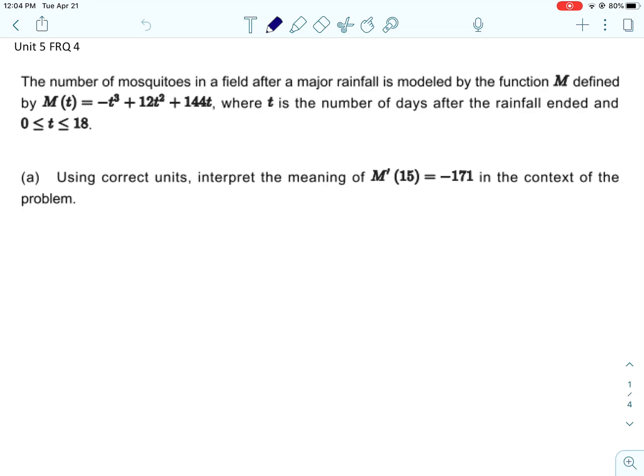All right, so this last application of derivatives problem is about mosquitoes, and I kind of like these questions where there's some kind of meaning in them. So the number of mosquitoes in a field after a major rainfall is modeled by the function M, where M(t) is that, and t is the number of days after the rainfall ended, and t is between 0 and 18.